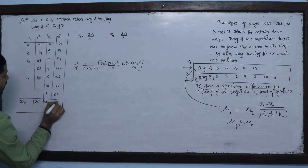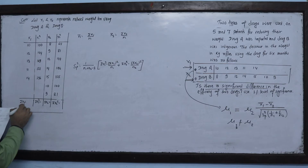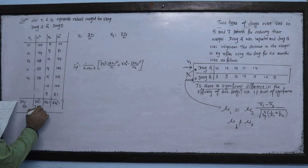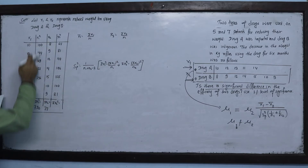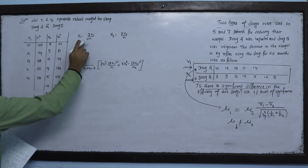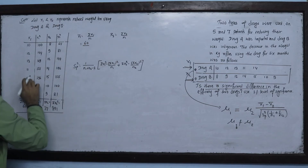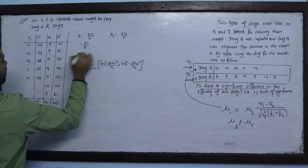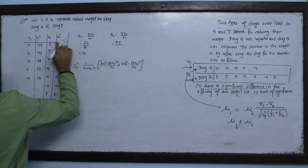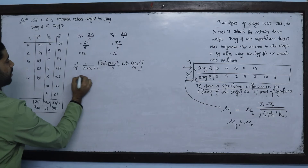Applying the calculations: summation x1 equals 60, summation x1 squared equals 730, summation x2 equals 77, summation x2 squared equals 891. Mean1 equals summation x1 divided by n1, which is 60 divided by 5 equals 12. Mean2 equals summation x2 divided by n2, which is 77 divided by 7 equals 11.